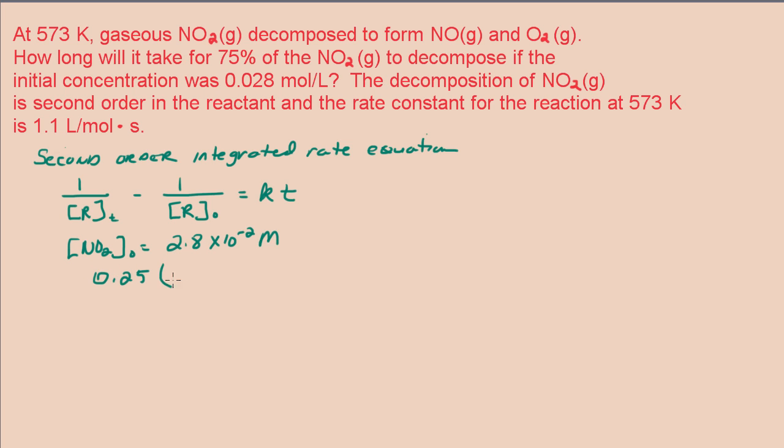We have 0.25, multiply that by the initial concentration, and that gives us a concentration of 0.7 times 10 to the negative 2 molar. This will be equal to the concentration of nitrogen dioxide at some time T, and that's what we have to find out.